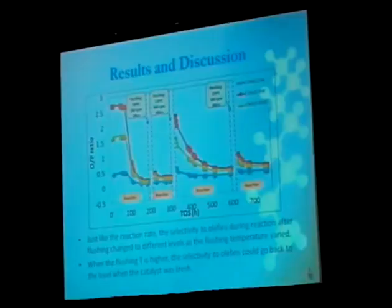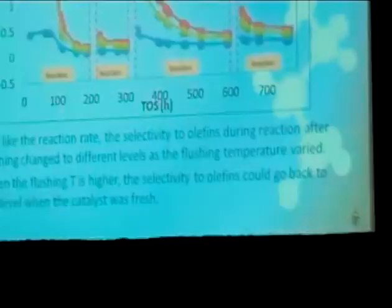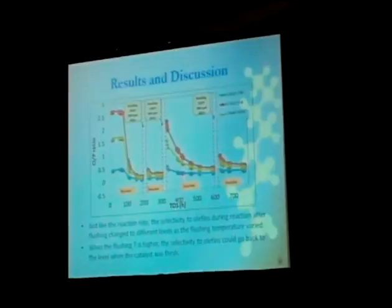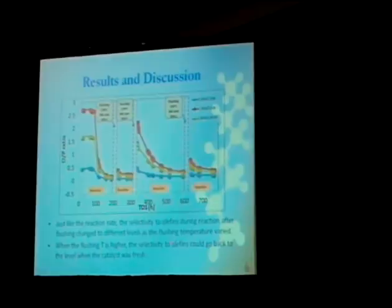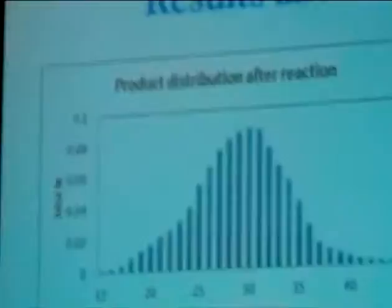So the same with the flushing experiments, now we look at the olefin to paraffin ratio. Similar behavior was observed. Is that initially you had a very high olefin to paraffin ratio. So here I'm only showing C2, C3 and C4. And then if you flush at 230, this is what you have. This is 190, flush at 230, this is what you have. So to some extent, the flushing experiment does show you that if you flush your catalyst, somehow it does get better to what you had when you had a fresh catalyst.